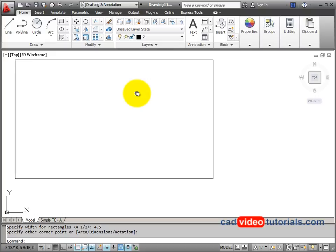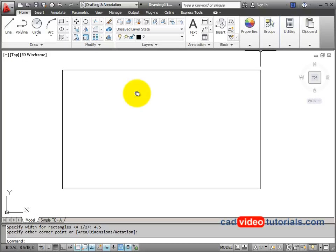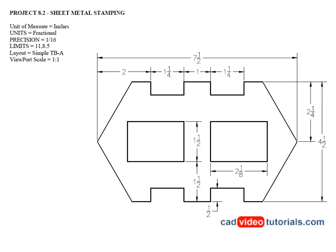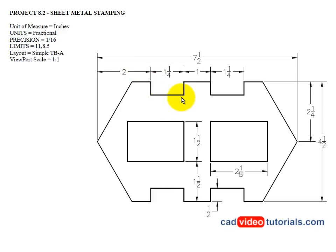I can zoom and pan to center this in my drawing area. Looking back at my object, I'm going to next draw the notches. They are 2 inches from the outside edge, half an inch deep, 1-1/4 inches long, and each notch is symmetrical from an imaginary center line running down the middle of the object.